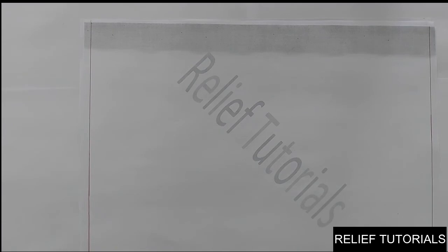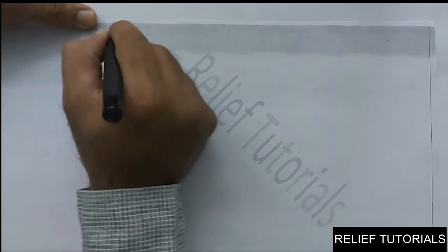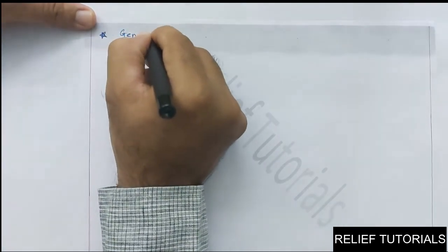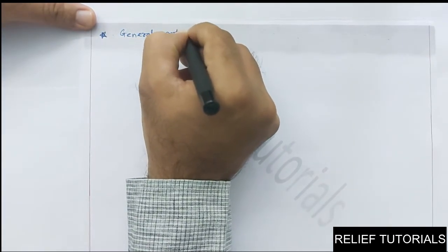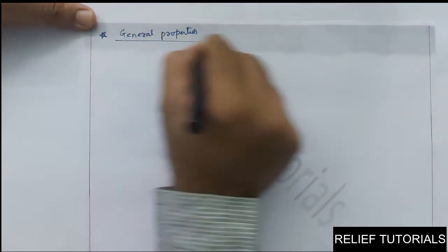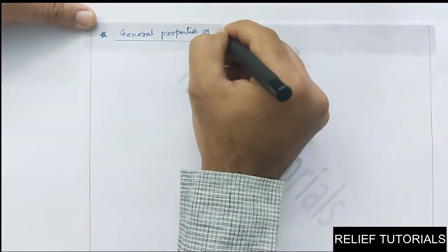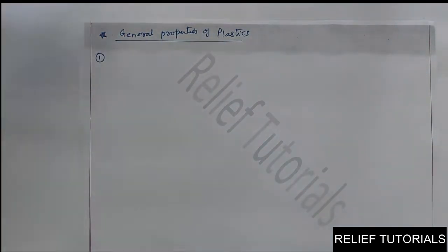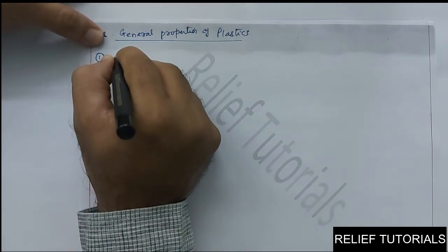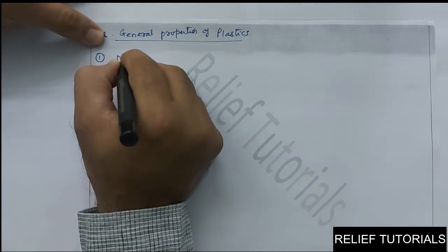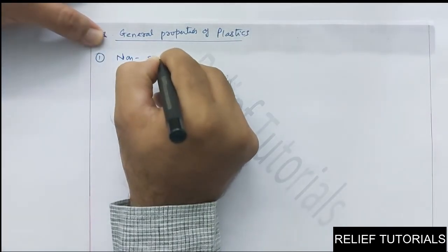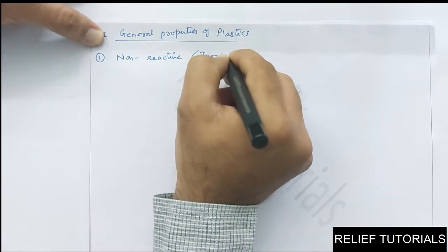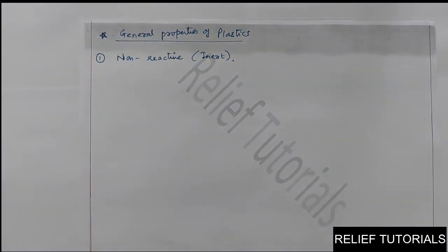The next topic is the general properties of plastics. The first property: plastics are non-reactive, meaning they are inert. Inert means non-reactive.